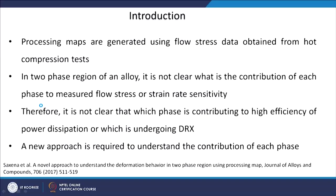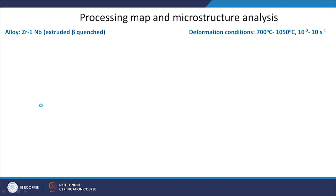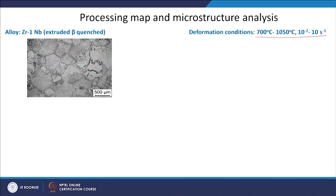To understand the behaviour of two phases in the two-phase region, we need some new input to the processing map. For this work, a zirconium-1 niobium alloy was taken and deformation conditions were 700 to 1050°C. The initial microstructure was an extruded beta-quenched equiaxed microstructure. The needle shapes visible are due to martensitic transformation during beta quenching, which is why you see this needle-shaped microstructure.